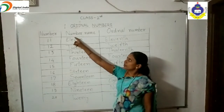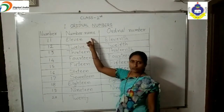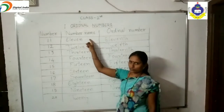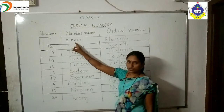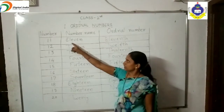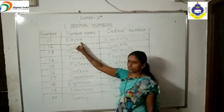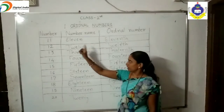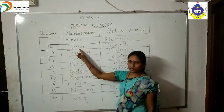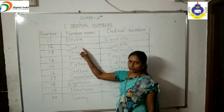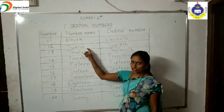In the second column, you write down the number name. Eleven: E-L-E-V-E-N, eleven. Twelve: T-W-E-L-V-E, twelve.